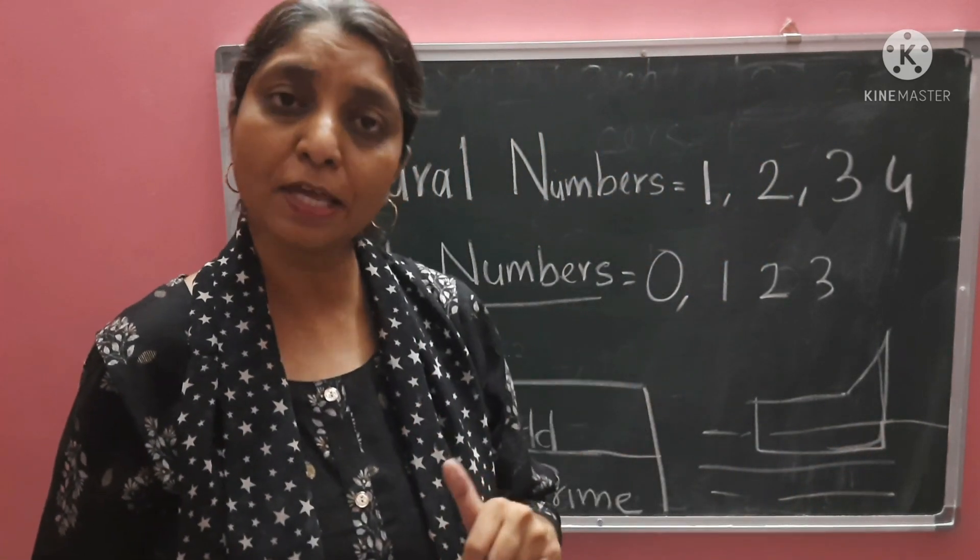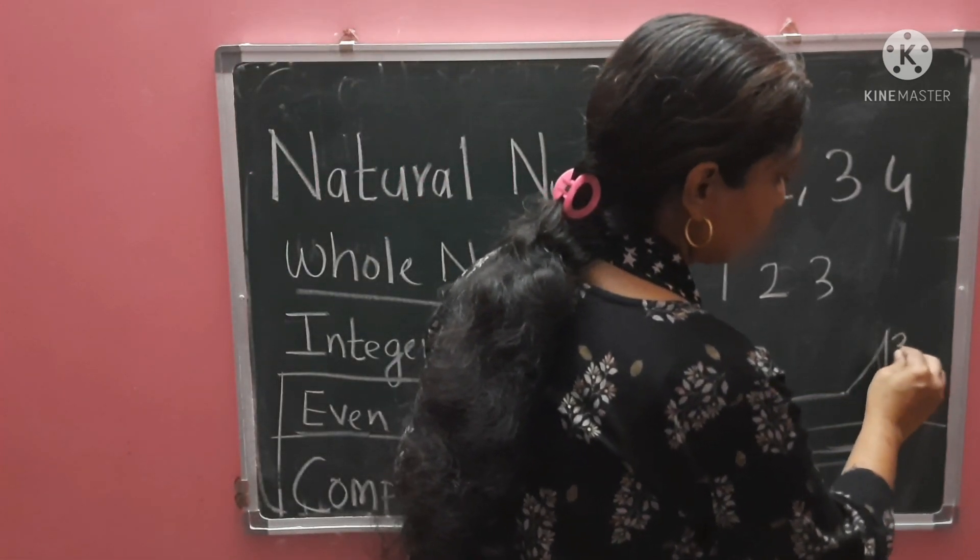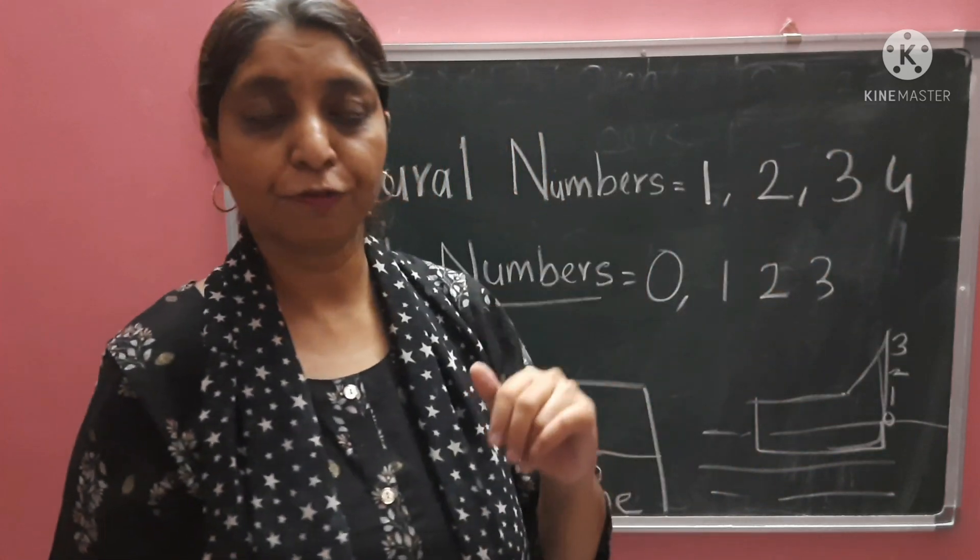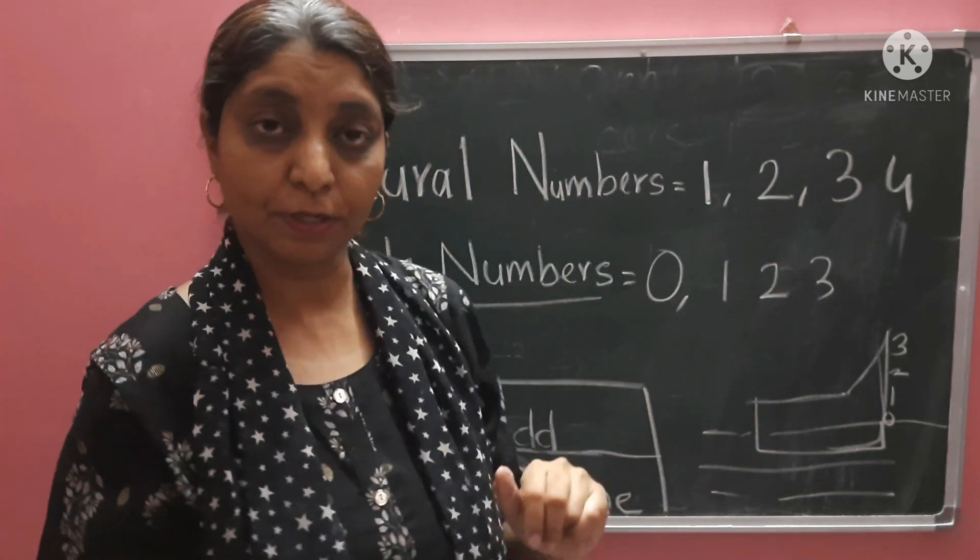So, how will we count the below height? Above we can count - 5 feet, 10 feet, 5 meters, 10 meters. But how will we count below?